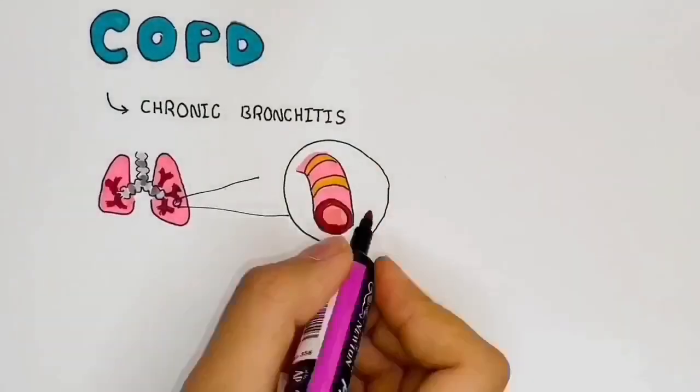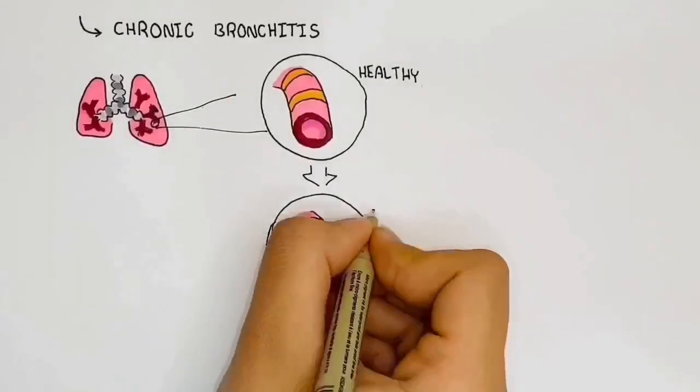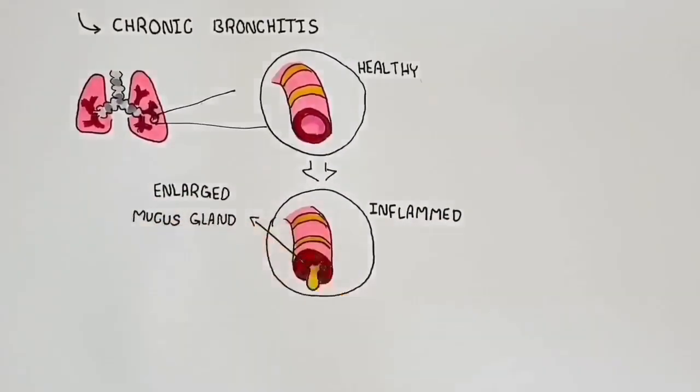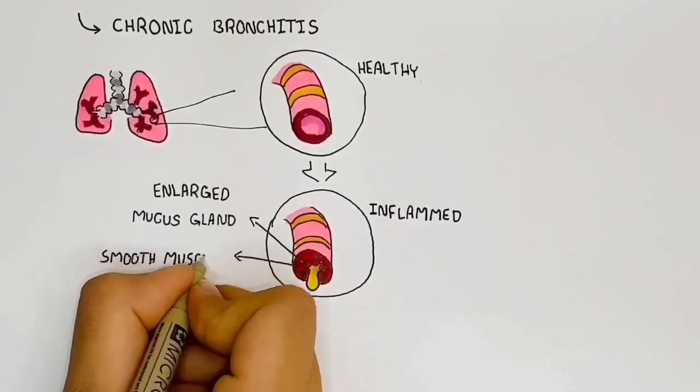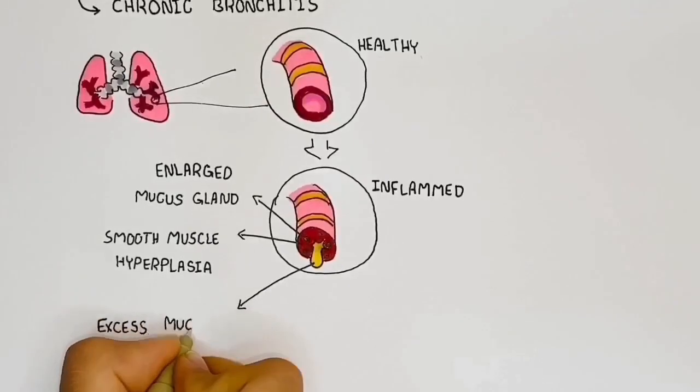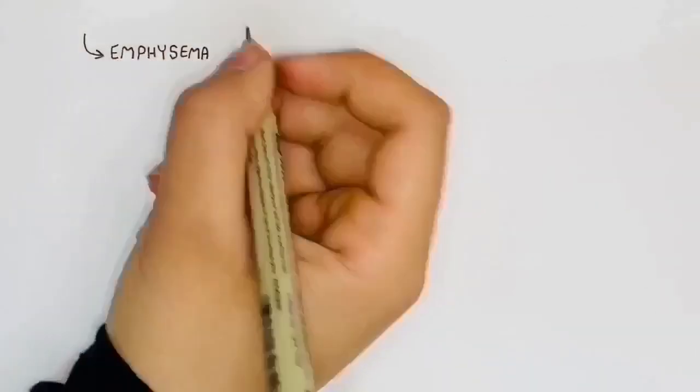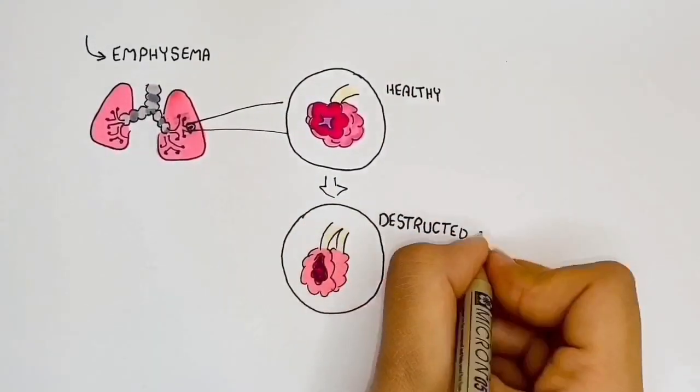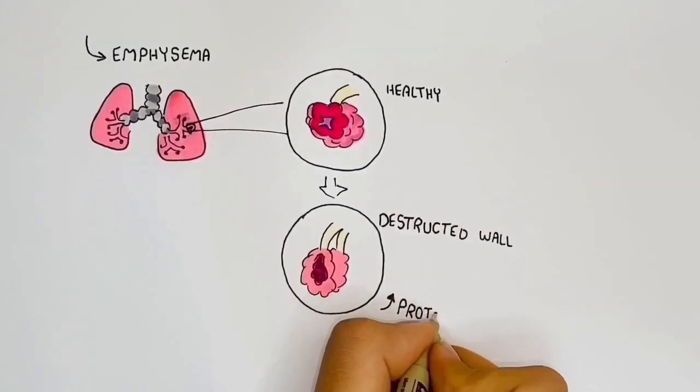The differences between healthy and inflamed bronchioles are the enlarged mucus gland, smooth muscle hyperplasia, and also excess mucus secretion. While emphysema shows the alveolar wall destruction due to excess protease.